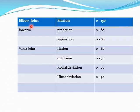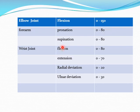For the elbow joint, flexion is 0 to 150 degrees. For the forearm, pronation and supination. Pronation: 0 to 80 degrees. Supination: 0 to 80 degrees.